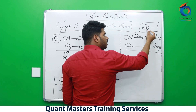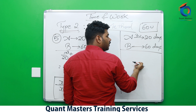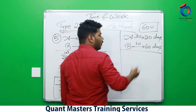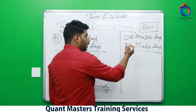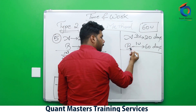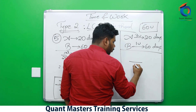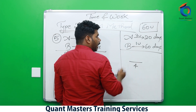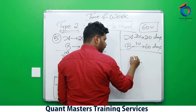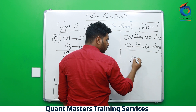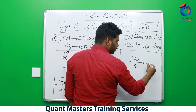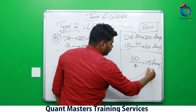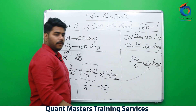B completes 60 units in 60 days, meaning in one day he does 1 unit. So A does 3 units per day, B does 1 unit per day — together they do 4 units per day. Total work is 60 units, so they complete it in 60/4 = 15 days. Same answer, faster and simpler way.